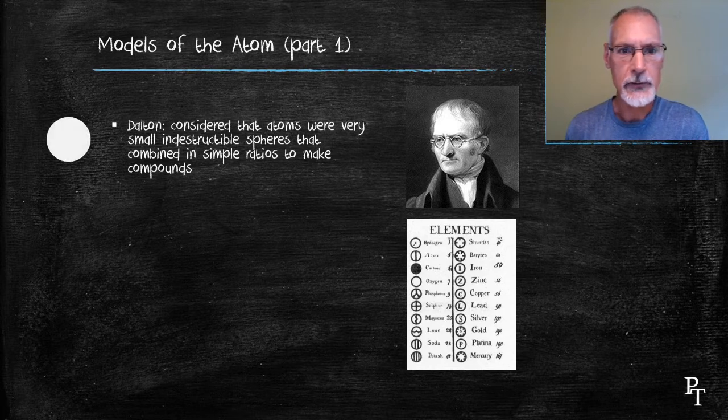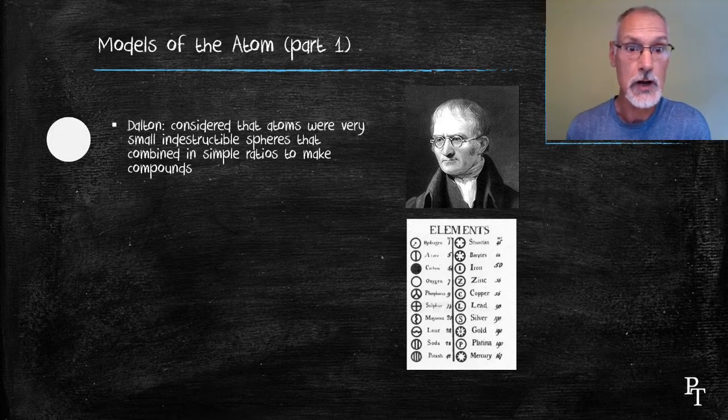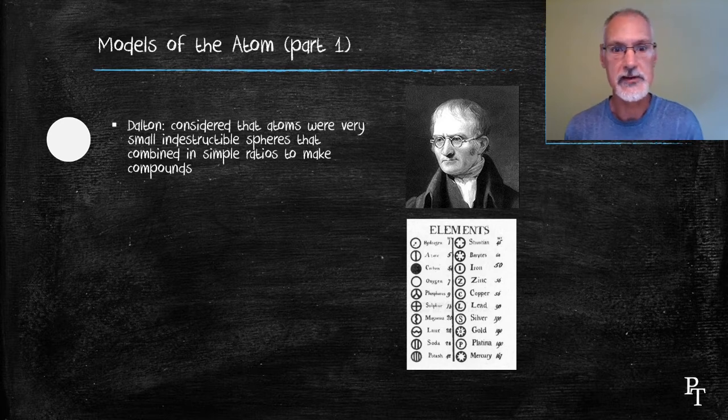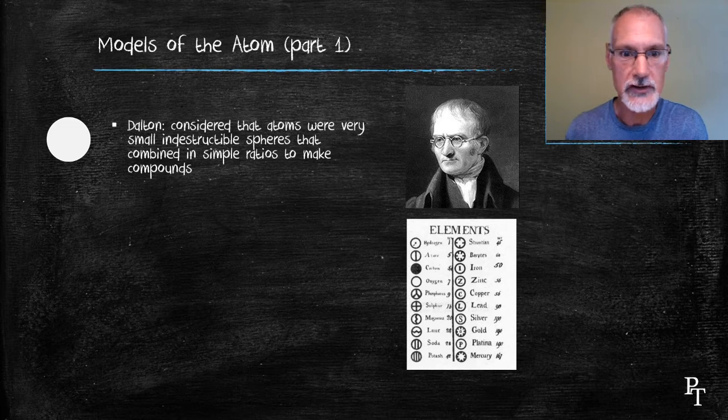These billiard balls would essentially group together in small conglomerates called molecules, so carbon dioxide, for instance, was made of an atom of carbon with two identical atoms of oxygen attached to it.